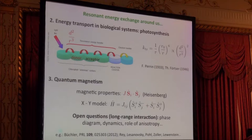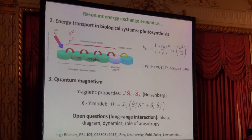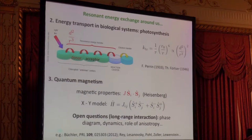The third example is magnetic properties of materials, where one introduces the Heisenberg model. One particular version is the XY model, which is exactly the Hamiltonian I wrote in the introductory slide. This Hamiltonian still has open questions — in particular in the case of long-range interactions of the R⁻³ type — such as the phase diagram, dynamics, and the role of the coupling, and there are many people working on this problem.